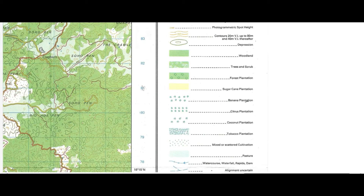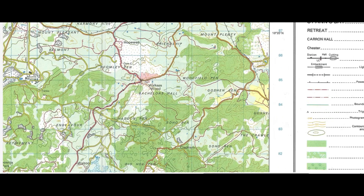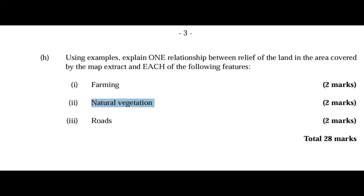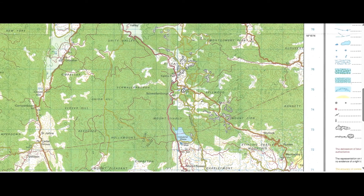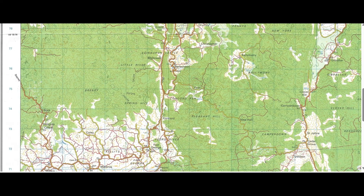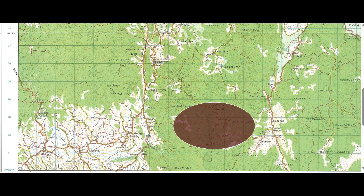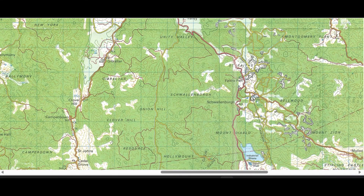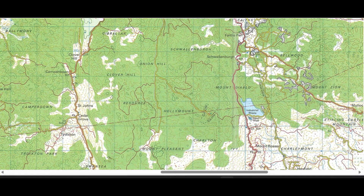Part H: explain one relationship between the relief of the land and each of the following features. For farming, relief relates to slope angle — mixed or scattered cultivation, an example of arable farming, can be seen on gentler slopes and not on very steep slopes. For natural vegetation, woodland vegetation encompasses a large geographical area shown by solid green shades, associated with steep topography — for example, Pleasant Hill. For roadways, Class A, B, and C roads are found on gentler slopes, while steeper areas such as Mount Pleasant have motorcycle tracks and footpaths.